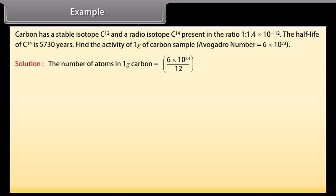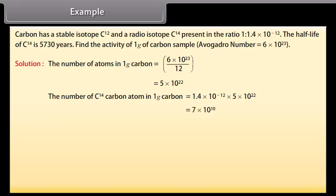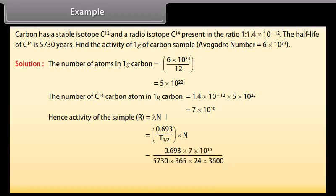Solution: The number of atoms in 1 gram carbon is equal to 6 into 10 raised to the power 23 divided by 12, which is equal to 5 into 10 raised to the power 22. The activity is equal to 0.693 into 7 into 10 raised to the power 10 by 5730 into 365 into 24 into 3600, which is equal to 0.26 per second per gram, approximately 16 per minute per gram.